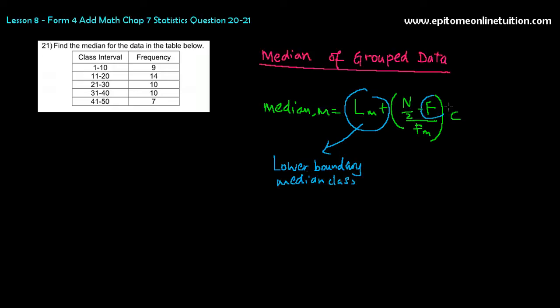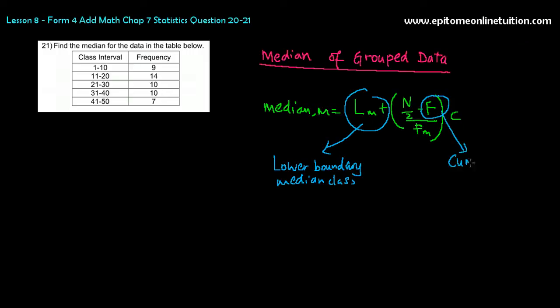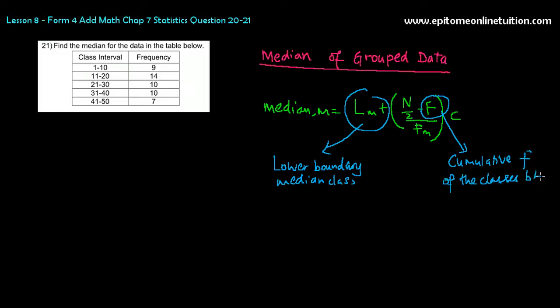And the big F, the big F here, stands for cumulative frequency of the classes before the median class. Before the median class. This is very important, the keyword before the median class. And the small F with an M here, the small F with an M here, it stands for frequency of the median class.